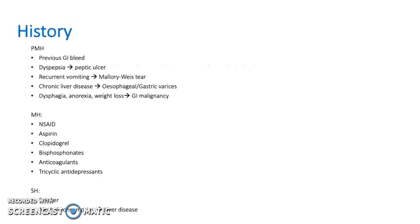In the history, ask about past medical history: have they ever had a GI bleed before? Do they suffer from dyspepsia, recurrent vomiting, or chronic liver disease? Have they had dysphagia, anorexia, or weight loss? These will all help indicate the cause.